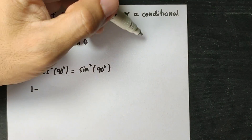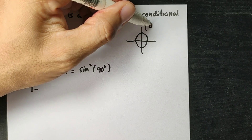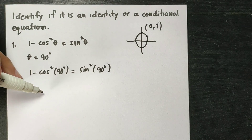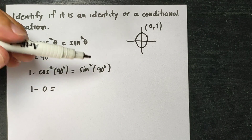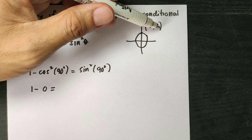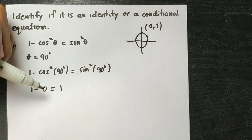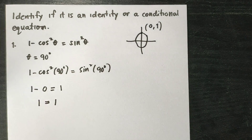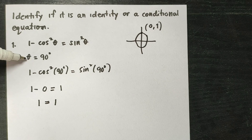The value of cosine 90 degrees, as you can see on the unit circle, is located here with coordinates 0 and 1. Cosine represents the x-coordinate, so that will become 0. The square of that is still 0. Sine represents the y-coordinate and that is 1, so 1 squared is 1. Therefore, 1 minus 0 is 1, and that is equal to 1 also. So this expression is equivalent to the other expression when theta is 90 degrees.